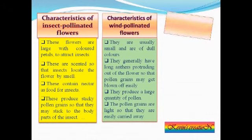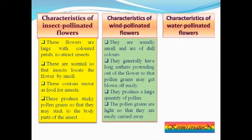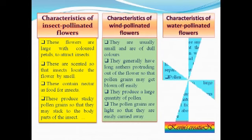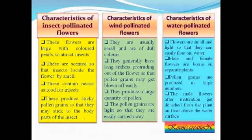The pollen grains of wind-pollinated flowers are light so that they can be easily carried away by the wind. For water-pollinated flowers, these flowers are also very small and light so they can easily float on water. The male and female flowers are borne on different plants, and many pollen grains are wasted, so they are produced in large numbers.